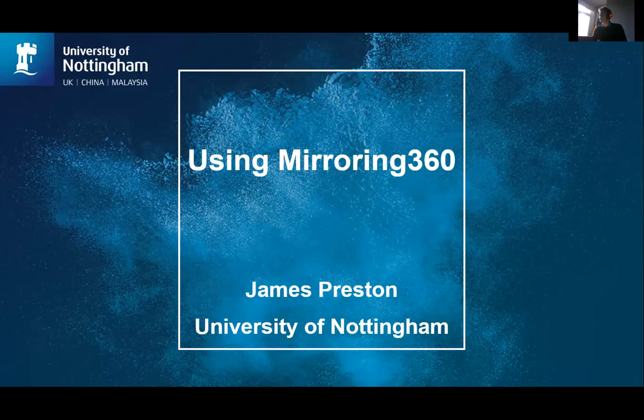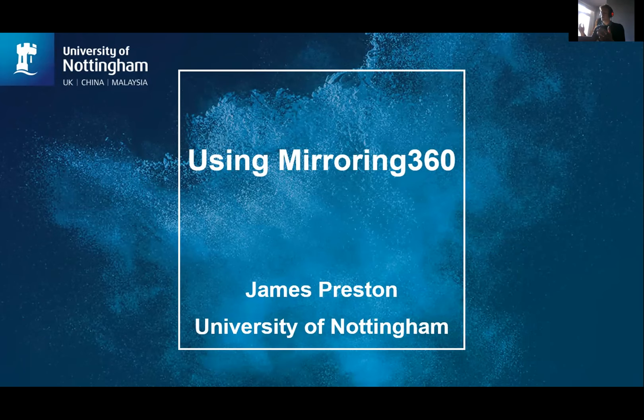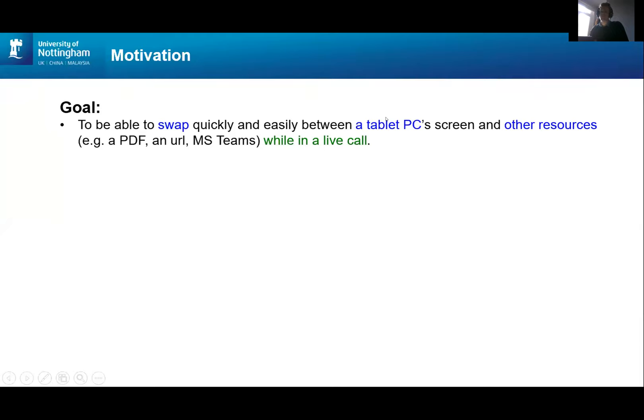I'm going to give you a quick talk about Mirroring 360, which in essence is an app that allows you to take the screen of a secondary device and bring it up as a window on your primary device. The reason why you might want to do this is you might want to swap quickly between, say, a tablet where you're doing some handwriting and other resources such as the internet or Teams.